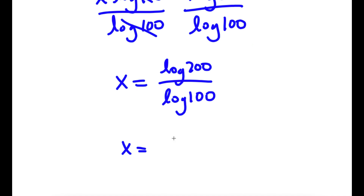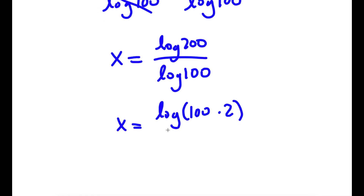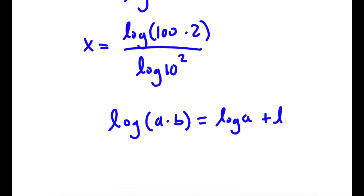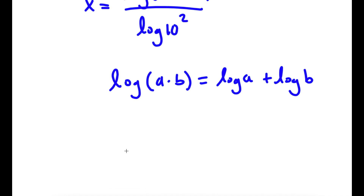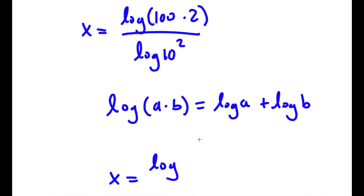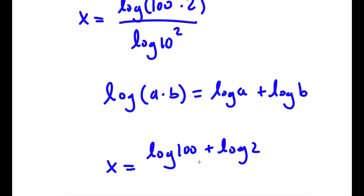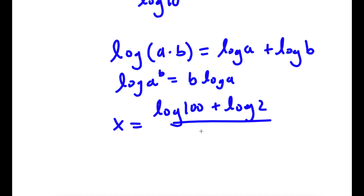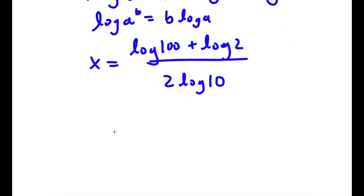Now log 200 I can rewrite as log of 100 times 2, and log 100 I can rewrite as log 10 squared. If I have something in the form log of a times b, this is the same thing as log a plus log b. So the numerator becomes log 100 plus log 2. And log 10 squared is the same thing as 2 times log 10, and log 10 equals 1.